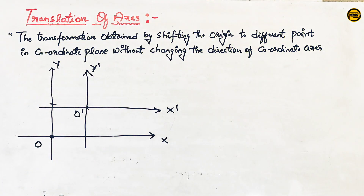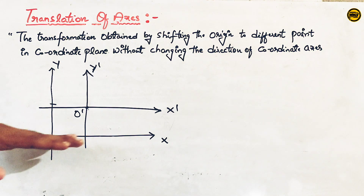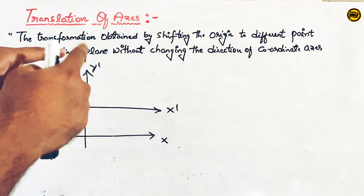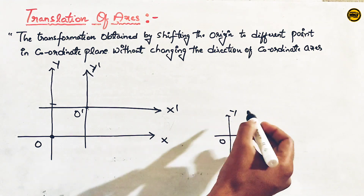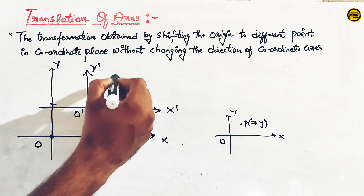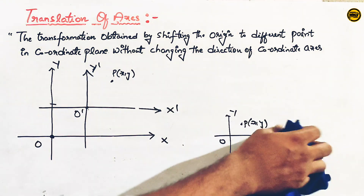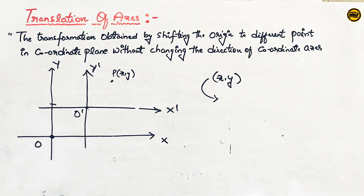The coordinate axis consists of x-axis and y-axis. In translation, we change the position of the origin without changing the direction of the coordinate axes. In the original system, we have x-y origin and a general point P(x, y).